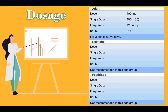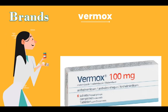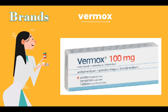The adult dose is 100 mg, single dose 100 mg, frequency of drug is 12 hourly, and the route is oral. Brands: Vermox.